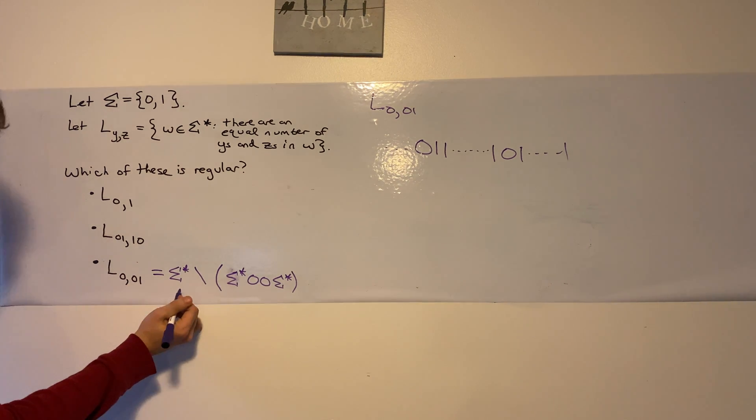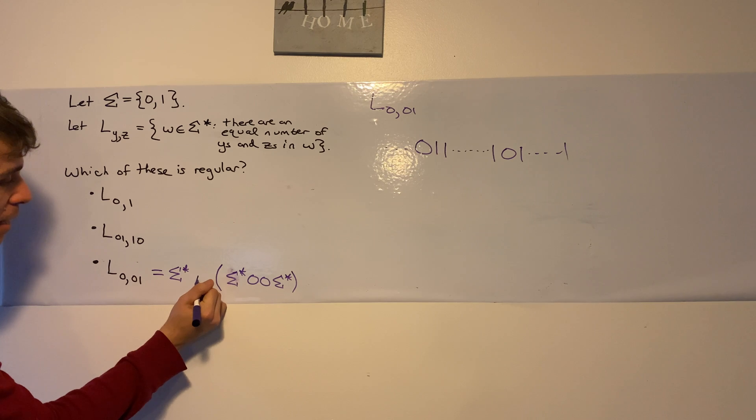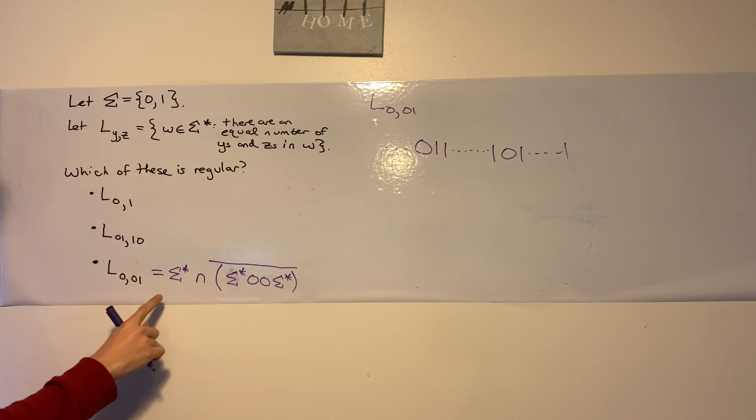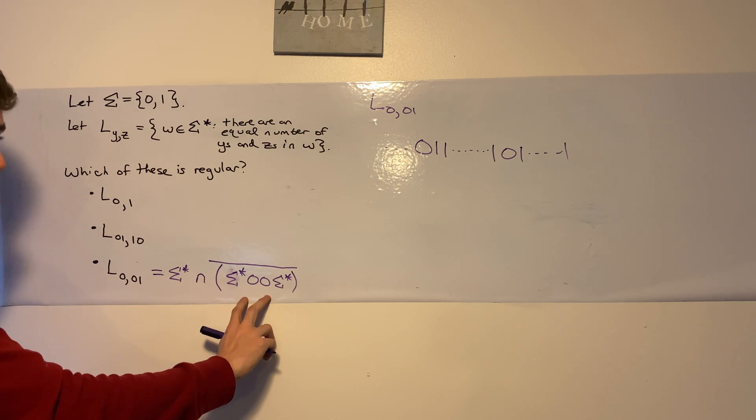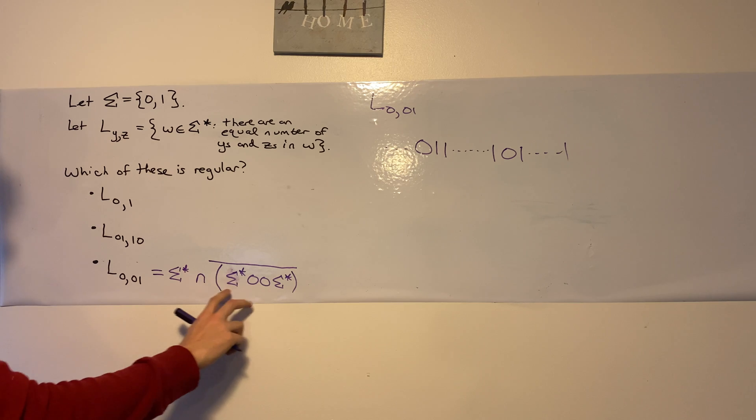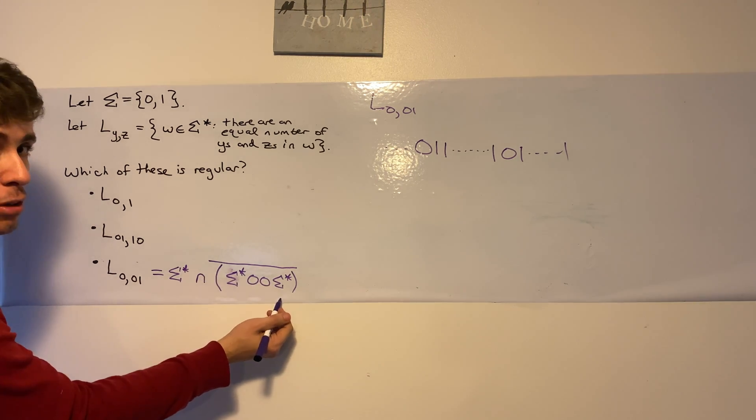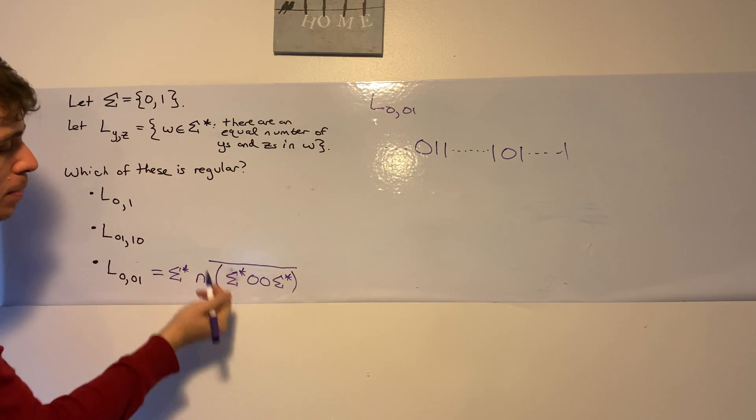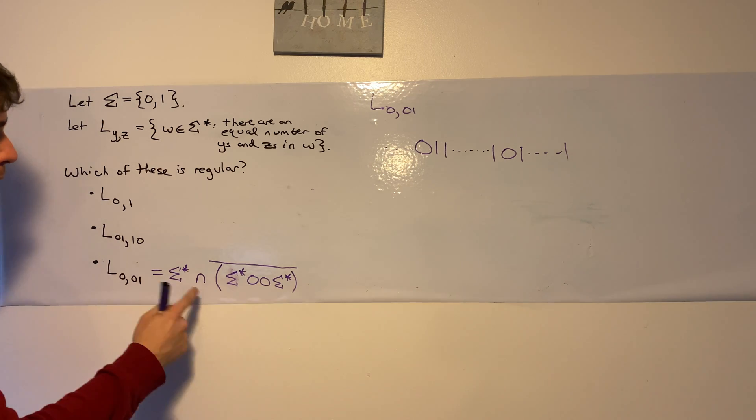So this one is regular because what does this say? The set difference operation is the same thing as saying the intersection from the first one, intersection, the complement of the second. Sigma star is certainly regular. Intersection, if the right-hand side is regular, closure under intersection tells us that the result is regular.